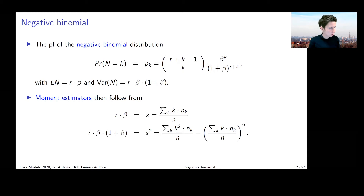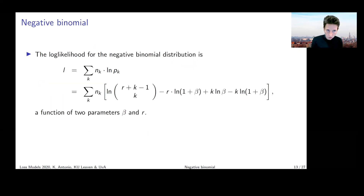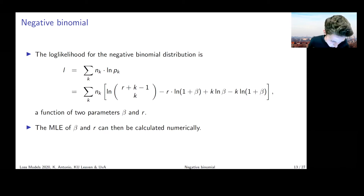However, it is more interesting to switch to MLE — maximum likelihood estimation — because then we have the whole machinery for quantifying uncertainty and computing confidence intervals. To do that, you switch to the log-likelihood, treat it as a function of the two unknown parameters beta and r, and perform the optimization with numerical routines. We cannot do that analytically anymore, so that's what I'll illustrate next week.